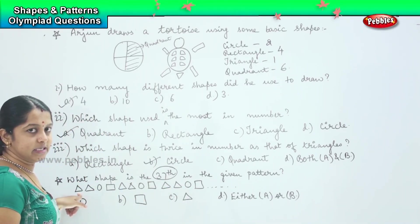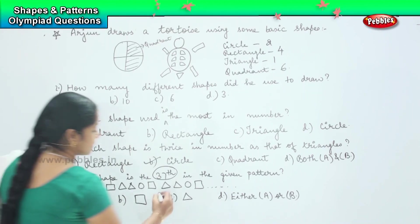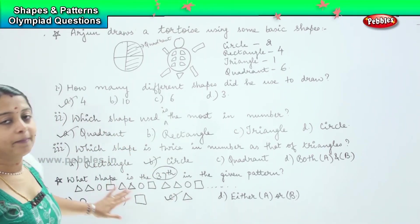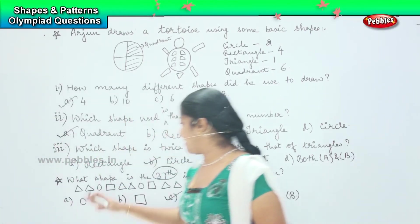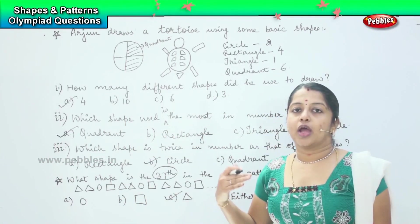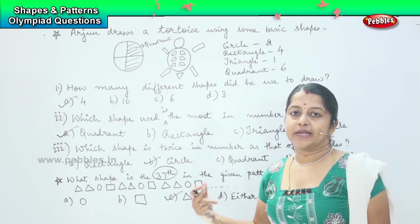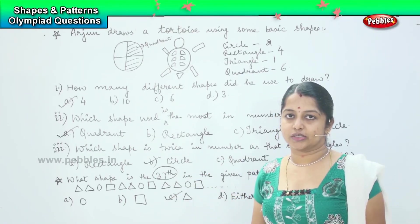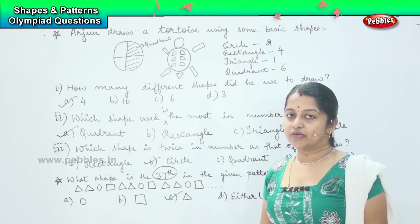So it is a, very good, it is a triangle. Understood, children? So it's a simple repetitive pattern. And based on the occurrence or the value which is getting repeated, we will be calculating the position that is asked in the question. Clear? Shall we move to the next one?